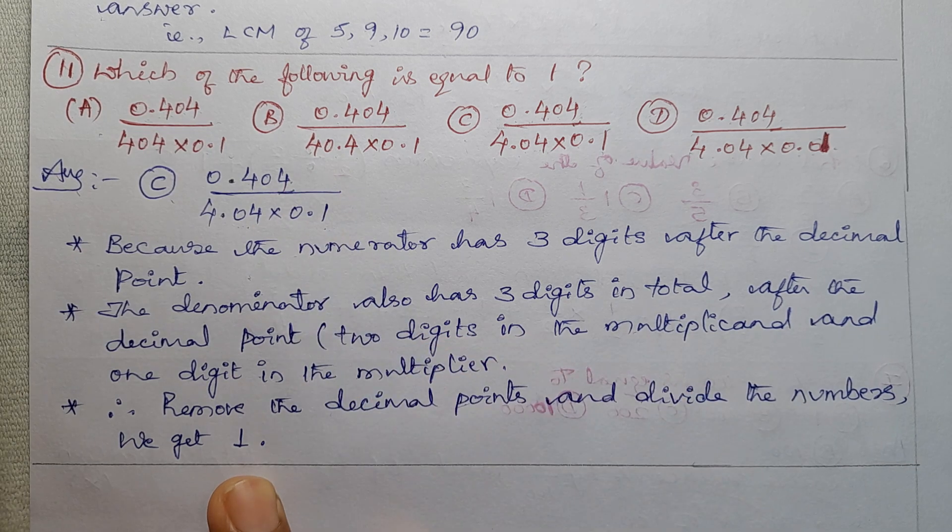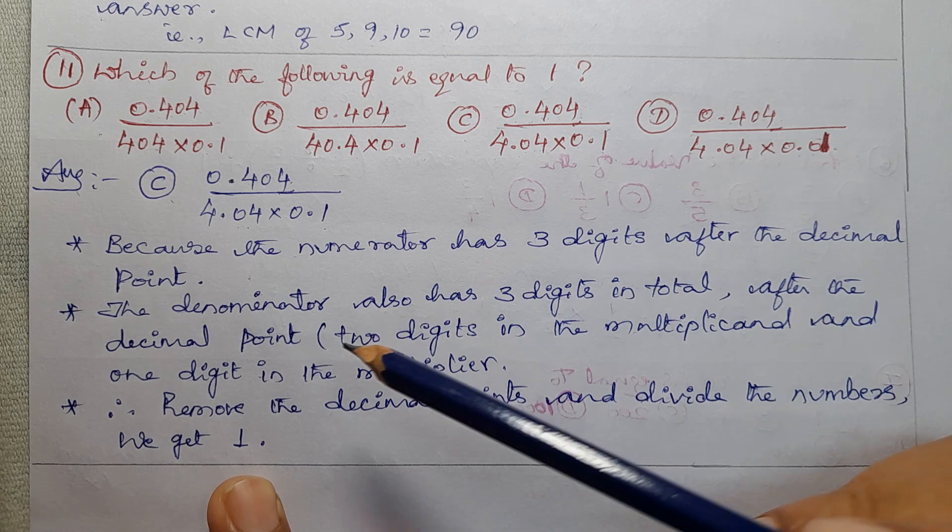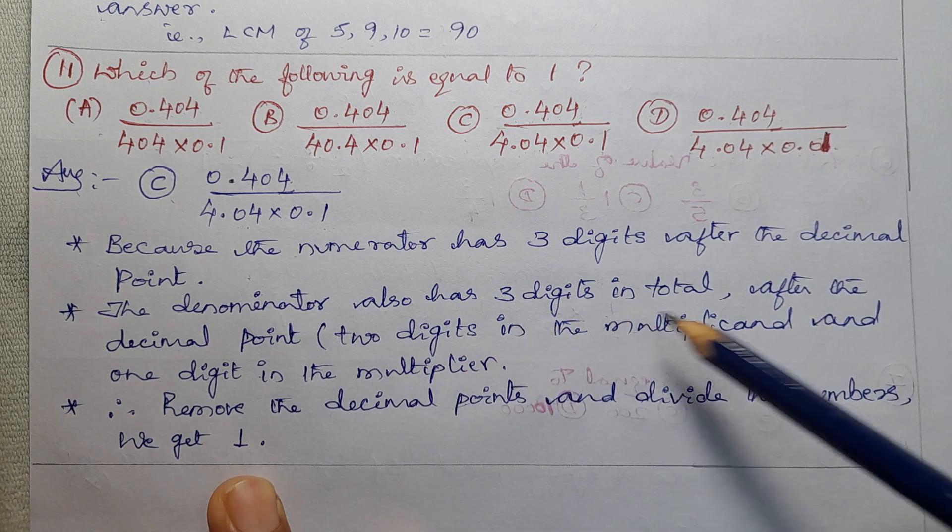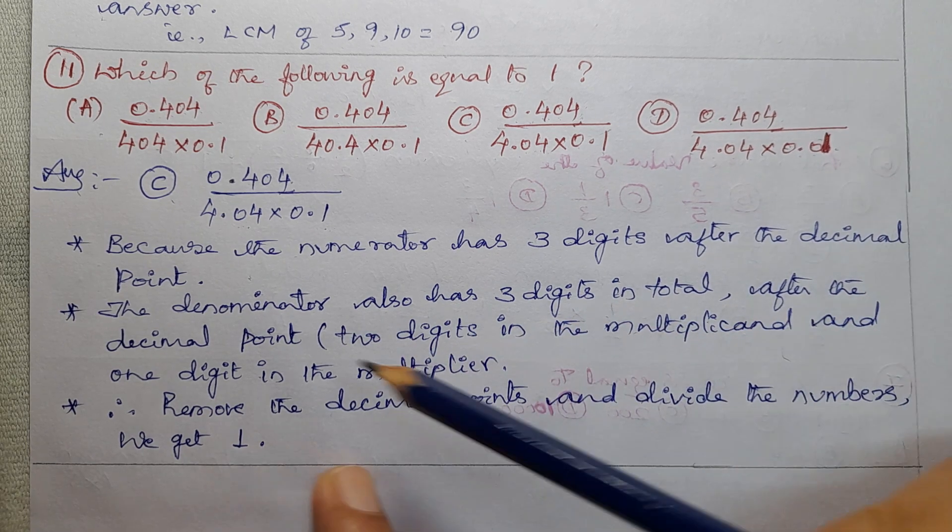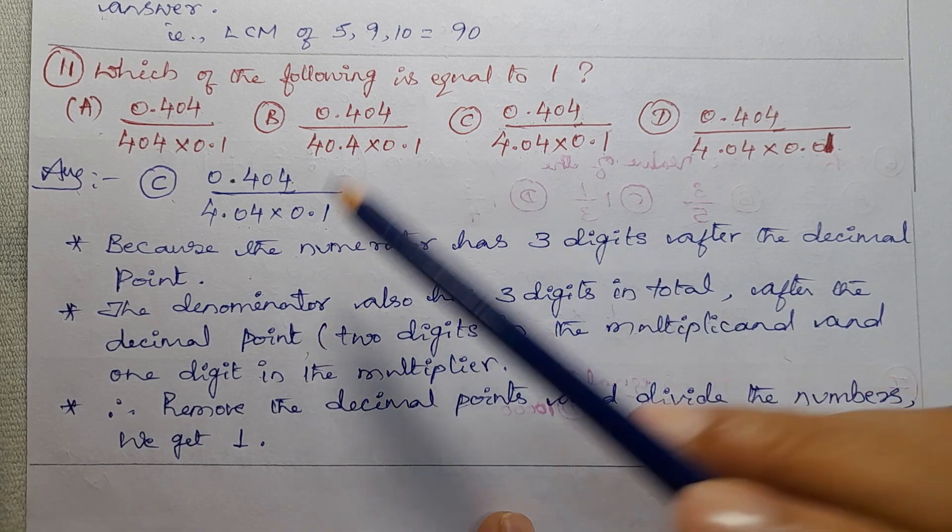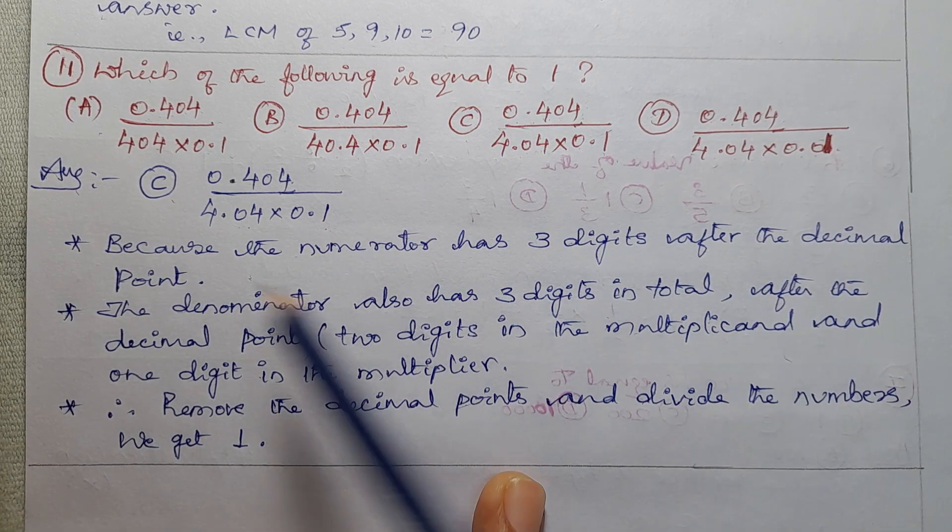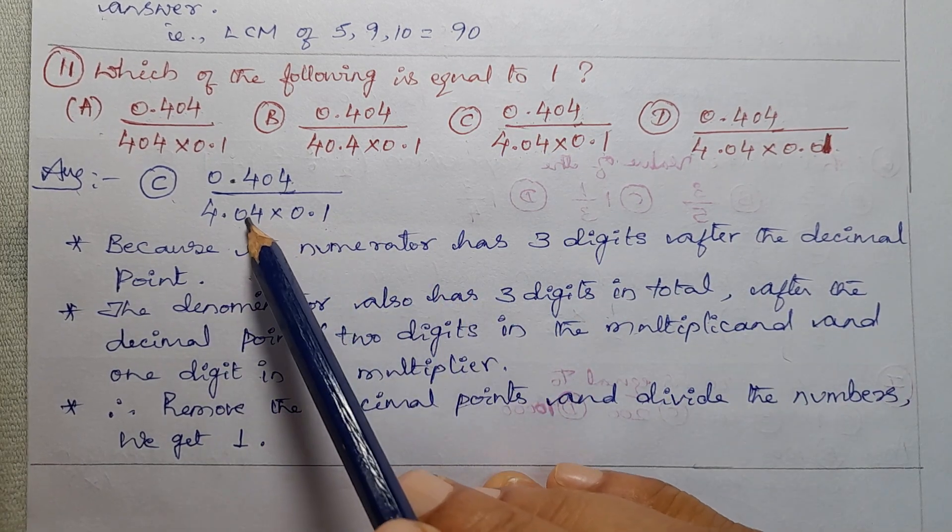So, after the decimal point, 3 digits are there. The denominator also has 3 digits in total after the decimal point. 2 digits in the multiplicand.